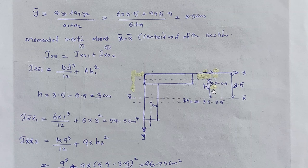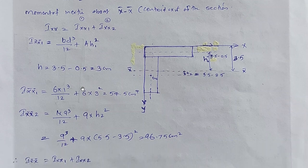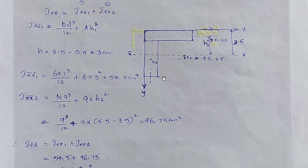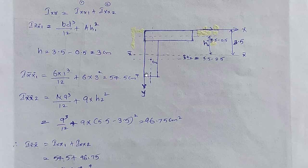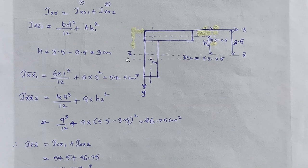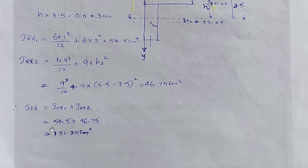Ixx1 = bd³/12 + A1·h1². That equals 3.5 minus 0.5, giving h1, and multiplying 3 by 3 gives Ixx1 equal to 54.5 cm⁴. Then Ixx2 for section 2: the centroid of section 2 about the x-axis gives a contribution using bd³/12 + A2·h2². The total moment of inertia of the complete section about the centroidal x-axis is obtained.